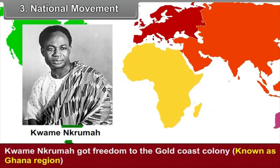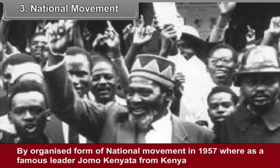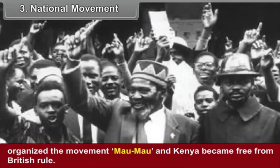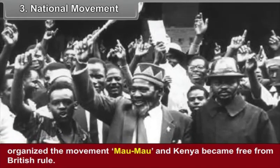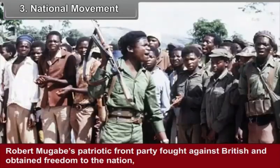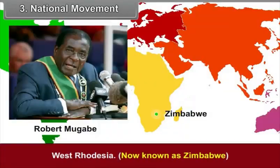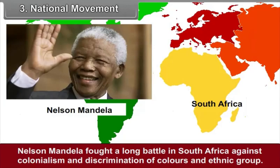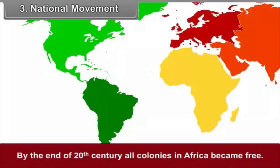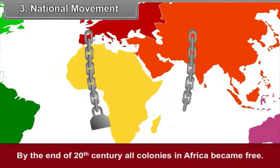Third, national movement. Kwame Nkrumah gained freedom for the Gold Coast colony, known as the Ghana region, through an organized national movement in 1957. A famous leader, Jomo Kenyatta from Kenya, organized the Mau Mau movement and Kenya became free from British rule. Robert Mugabe's Patriotic Front party fought against the British and obtained freedom for the nation of West Rhodesia, now known as Zimbabwe. Nelson Mandela fought a long battle in South Africa against colonialism and racial discrimination. By the end of the 20th century, all colonies in Africa became free.